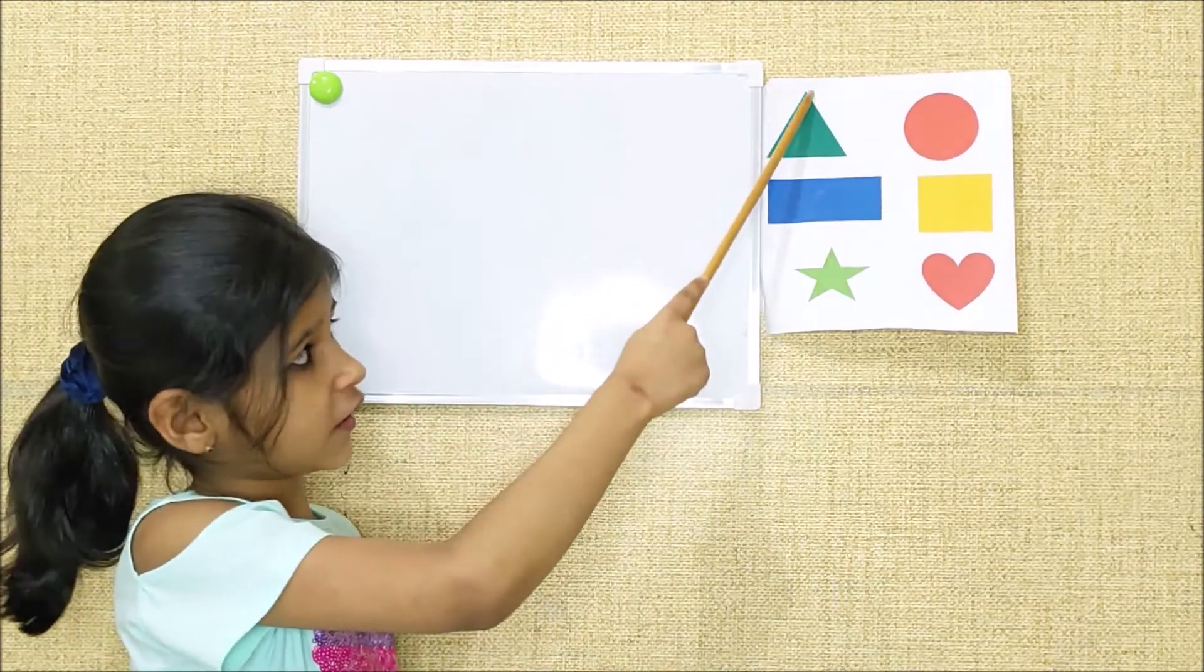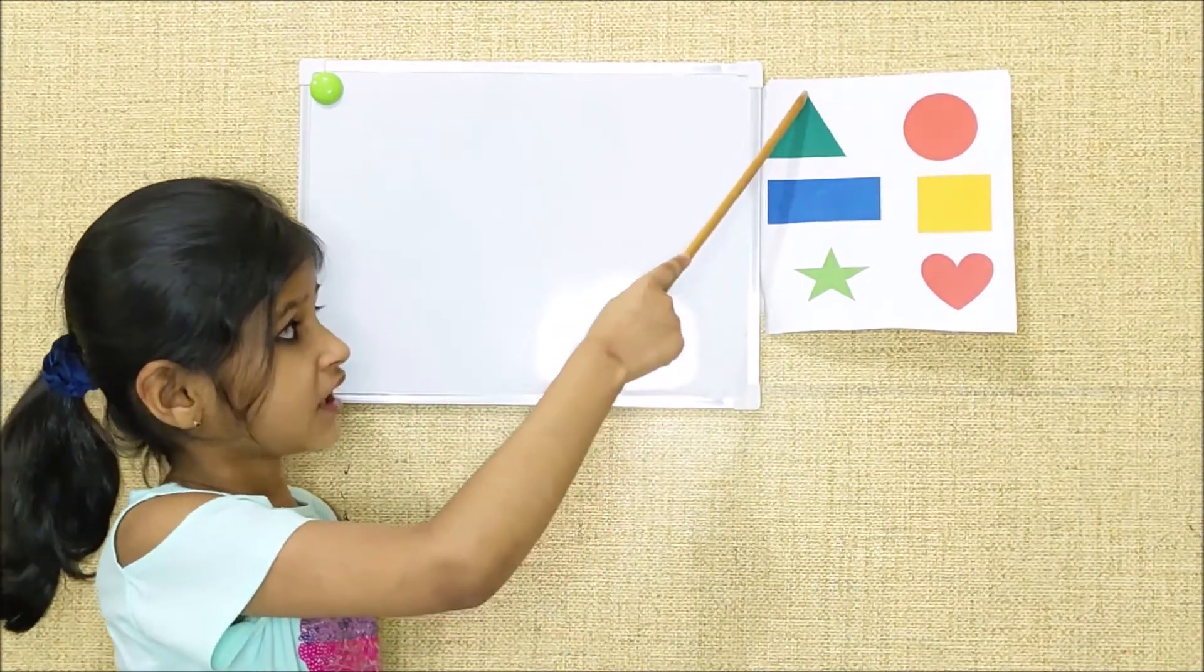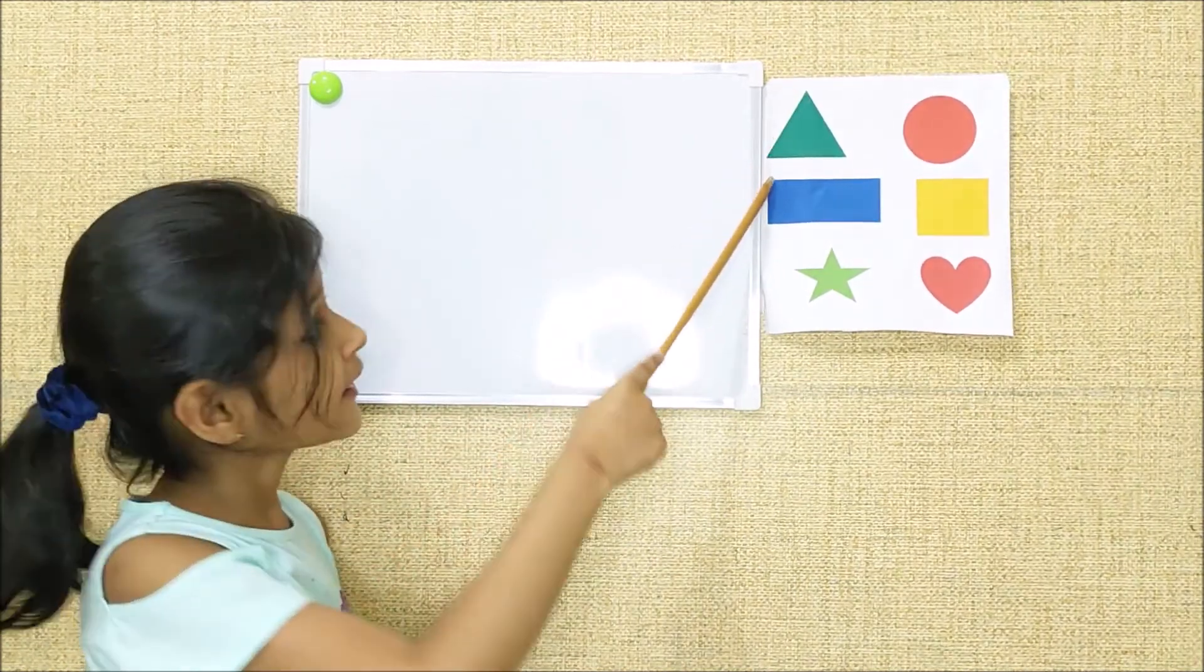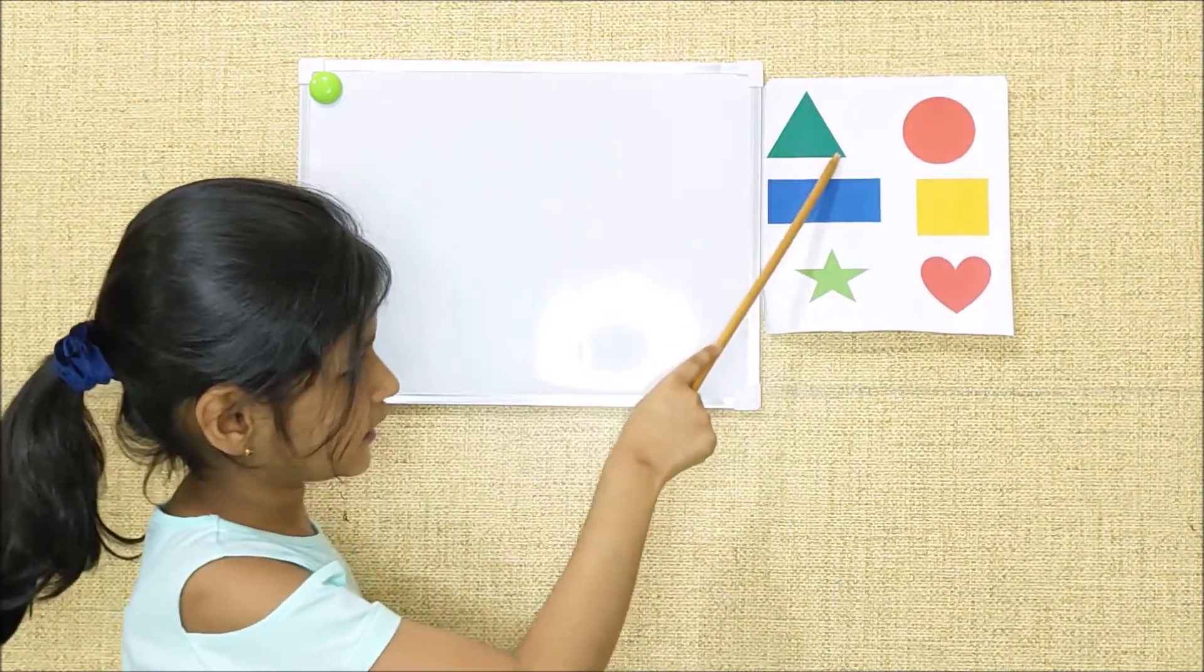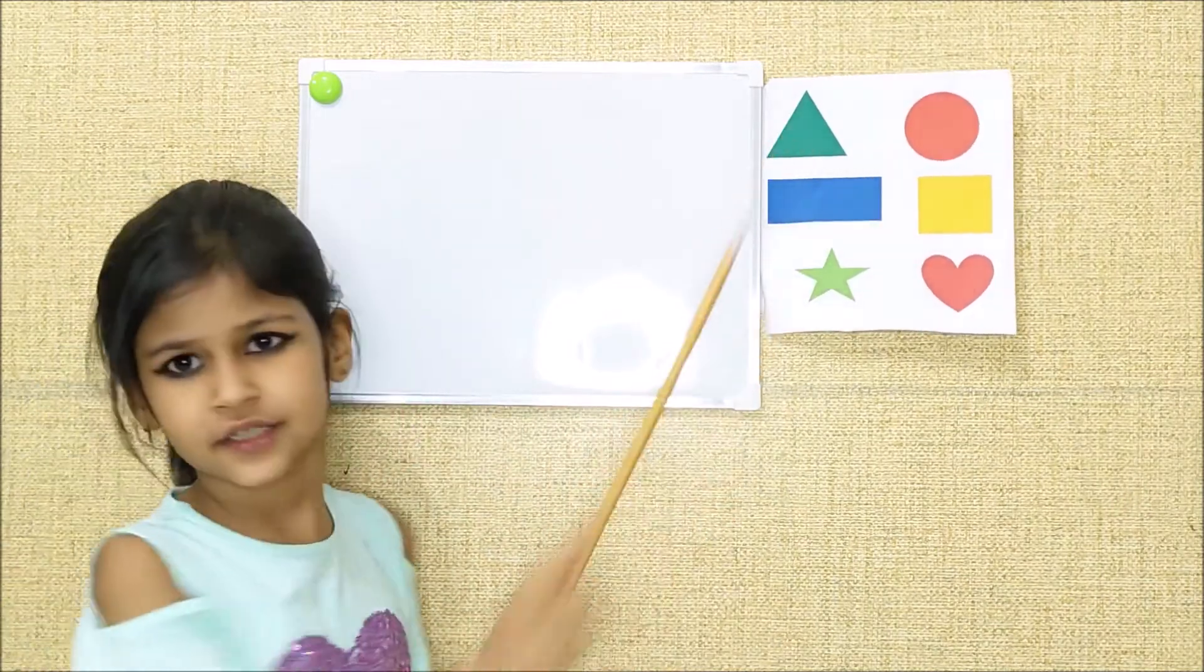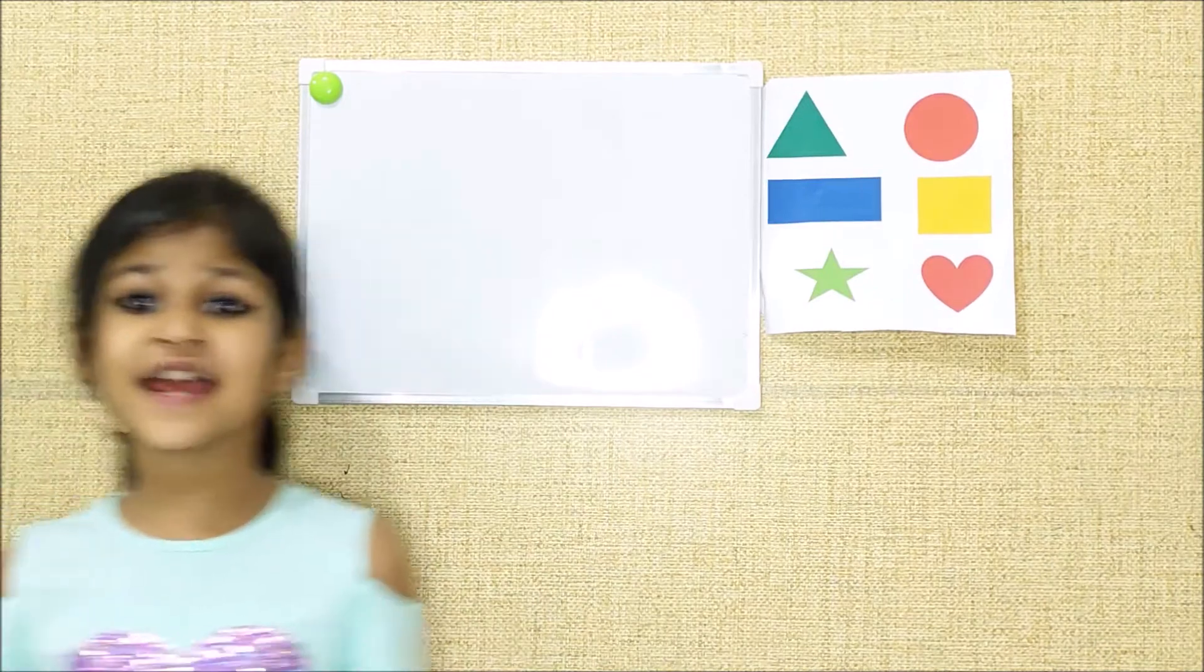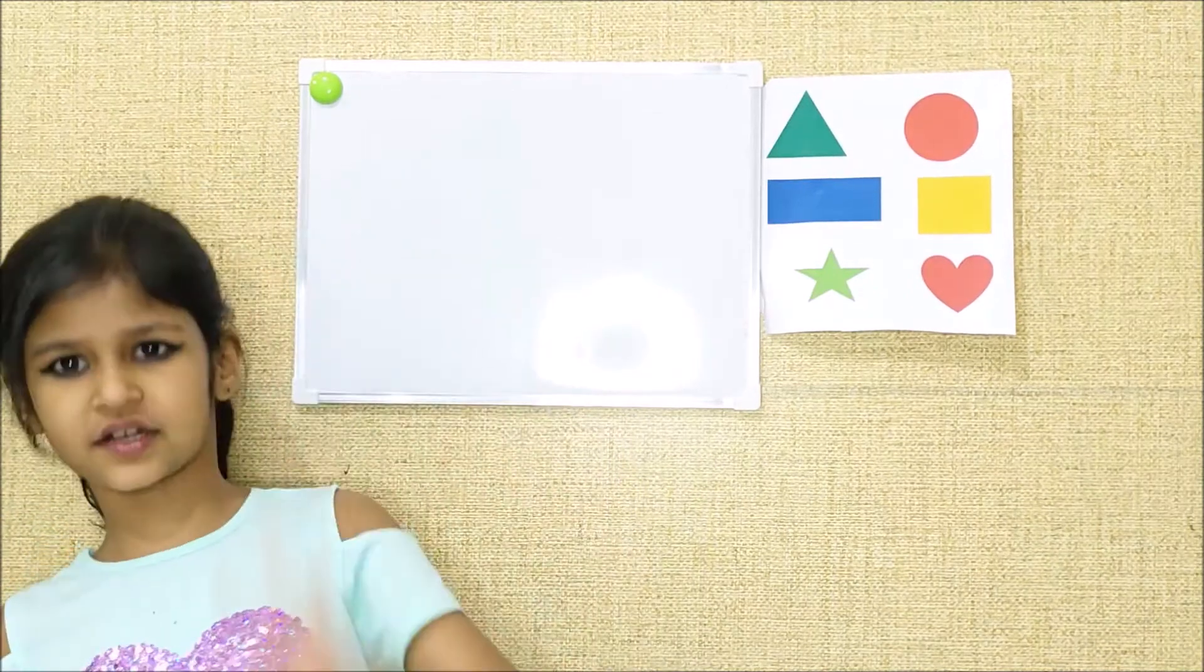This is a triangle. First you must draw a right slanting line, then a left slanting line, then a sleeping line. Triangle has three corners.